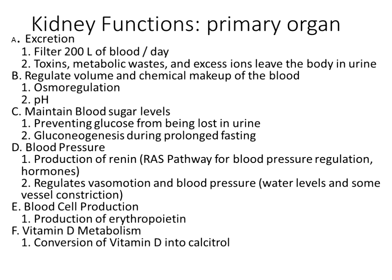Gluconeogenesis uses building blocks from lactic acid, amino acids like alanine, or glycerol from triglyceride breakdown. Blood pressure regulation at the kidneys depends on regulating body water levels — more water retained means higher blood volume and higher blood pressure. This long-term regulation relates to solute regulation and water levels. The kidneys use the renin-angiotensin pathway to retain fluid, solutes, and water, thereby increasing blood volume and blood pressure.